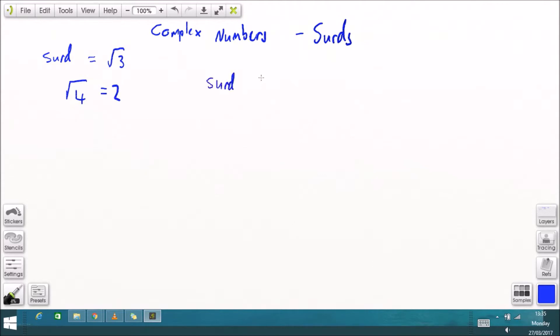If you write it as a decimal you can be close but not entirely accurate. Square root of four can be written as two so you wouldn't need to write it as a surd in that case.